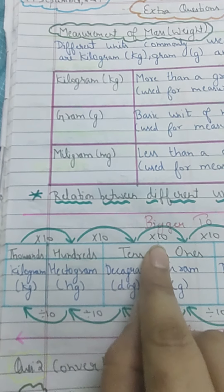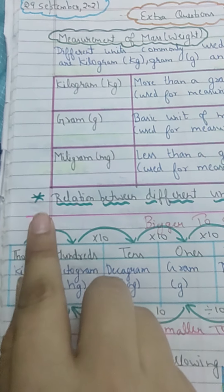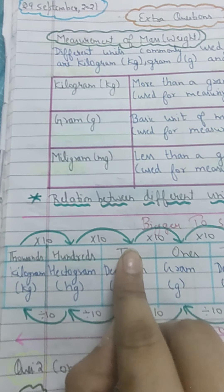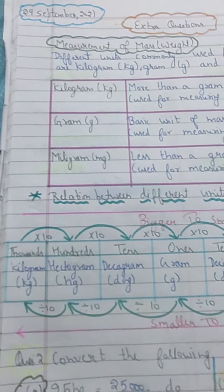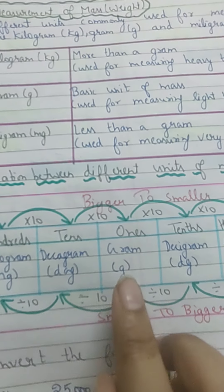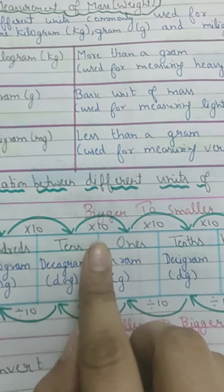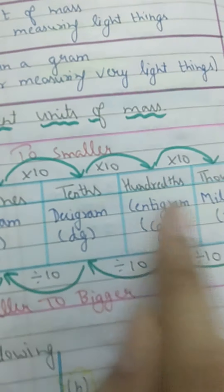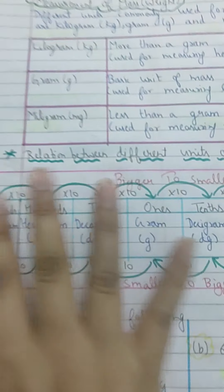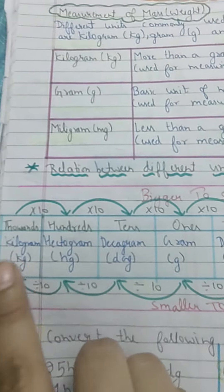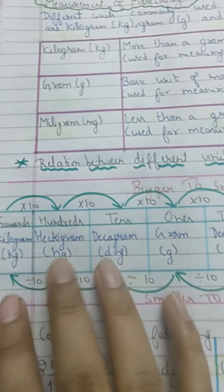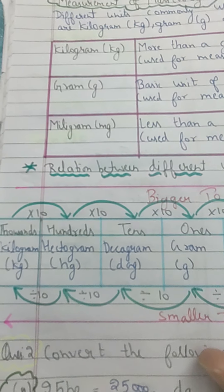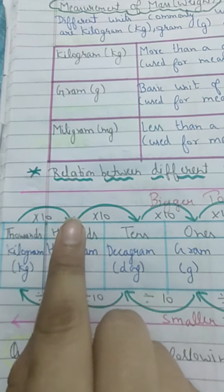To remember the series, use the mnemonic: 'King Henry Died, Grandmother Did Not Cry Much.' Earlier we used 'Mother' — now we change it to 'Grandmother.' So: King Henry Died Grandmother Did Not Cry Much. You can use 'grandfather' if you prefer. This helps you remember: kilogram, hectogram, decagram, gram, decigram, centigram, milligram.